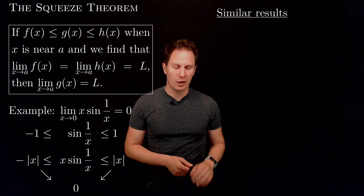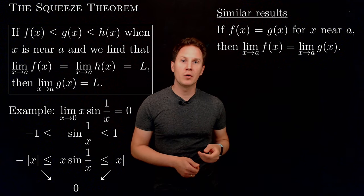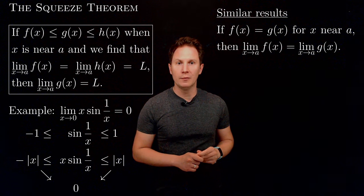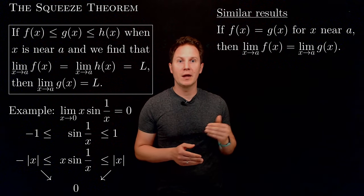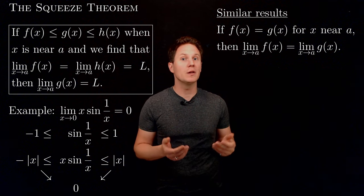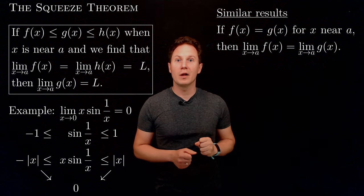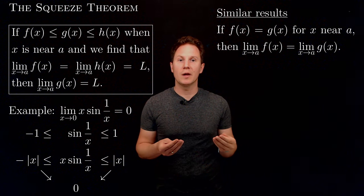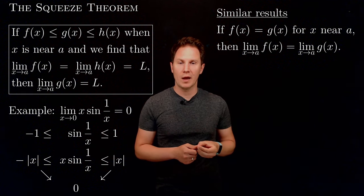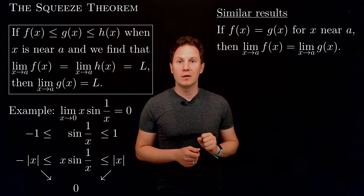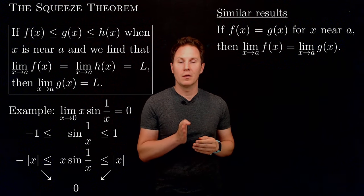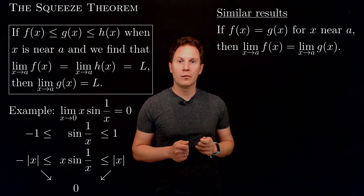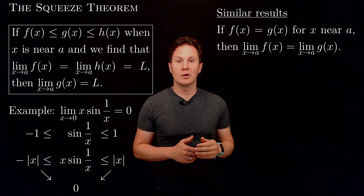I'll give you two similar results. The first says that if f(x) and g(x) are equal for x near a and their respective limits exist, then those limits must also be equal. Notice how this result doesn't tell you anything about f(a) or g(a) being related in any way — they might not even be defined. This shows that the limit only cares about the function's behavior around x equals a and not its exact value at x equals a. So the limit is indeed a local property rather than a pointwise property. This result is responsible for the methods of factoring and using conjugates actually working.